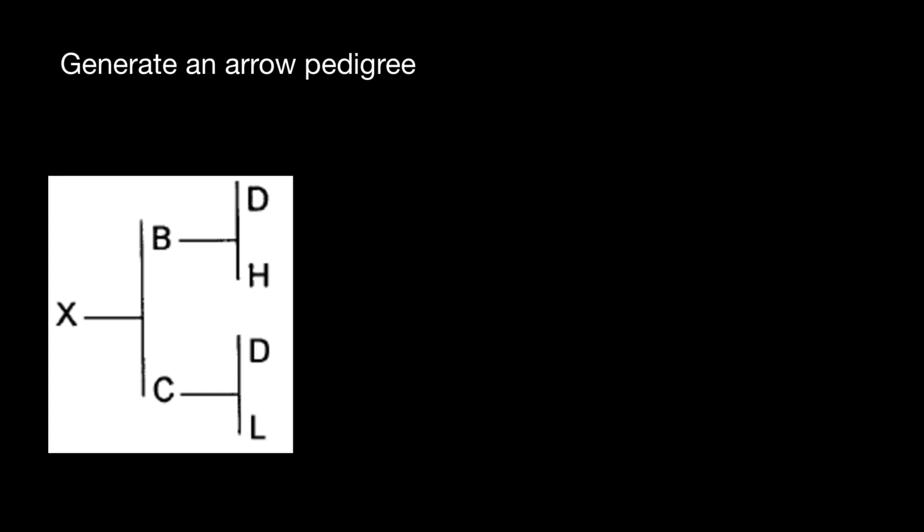So we need today to generate an arrow pedigree using this one. And first of all, because D here, parent D, and as you see, sex of these individuals are not shown. So we can use and specify any sex.